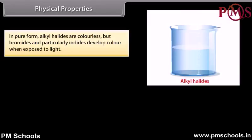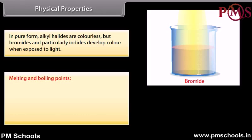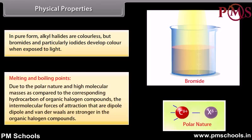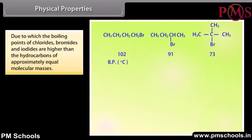Physical properties: in pure form, alkyl halides are colorless, but bromides and particularly iodides develop color when exposed to light. Due to the polar nature and high molecular masses of organic halogen compounds, the intermolecular forces of attraction — dipole-dipole and van der Waals — are stronger than in corresponding hydrocarbons. As a result, the boiling points of chlorides, bromides, and iodides are higher than those of hydrocarbons of approximately equal molecular mass.